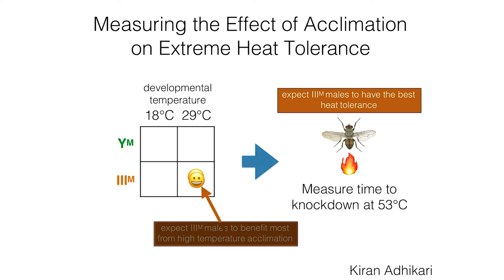Because the orange ones are found in the south, we predicted maybe they're better at tolerating heat. A graduate student, Kieran, took the two different versions — green and orange — and raised them at low and high temperature. He then put them in an absurdly high temperature: 53 degrees Celsius, which is about 127 degrees Fahrenheit — it's hot. We have reason to believe that if they grow at high temperature, they actually do better in the heat. Just like if you're from Houston, maybe you do better in the summers here than someone from Los Angeles.